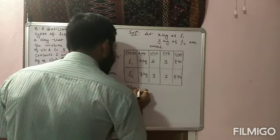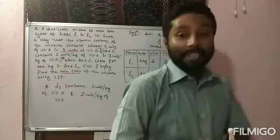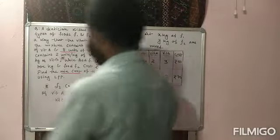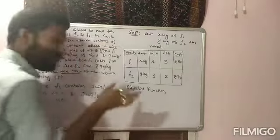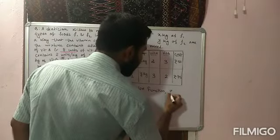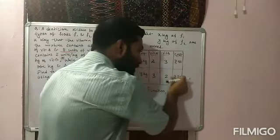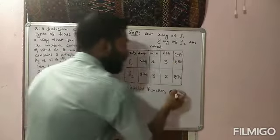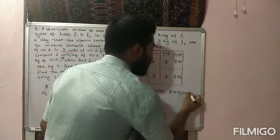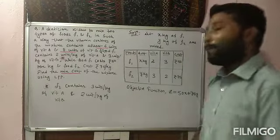Now write the mathematical representation. The first part is the objective function — a linear function from which we determine maximum or minimum value. Here we need minimum cost, so check the cost column: food F1 costs rupees 50 per kg and we assumed x kg, so the term is 50x; food F2 costs rupees 75 per kg and we assumed y kg, so the term is 75y. Therefore, objective function: minimize Z = 50x + 75y.